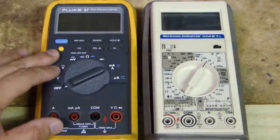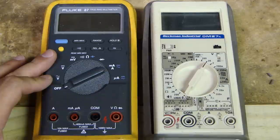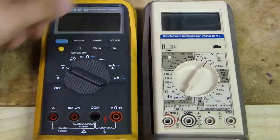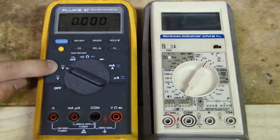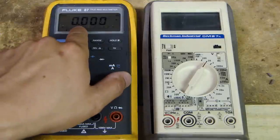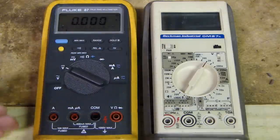This Fluke 87 is what they call auto-ranging. And the auto-ranging is very convenient because once you select, let's say if I select one of the measurement, which is DC voltage, it will automatically move the decimal points as the voltage goes up.